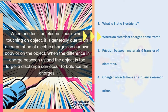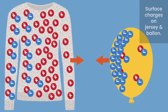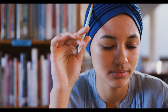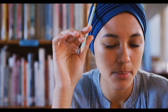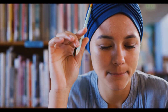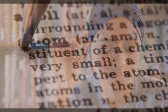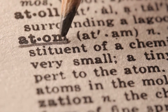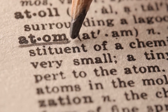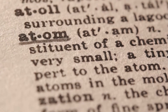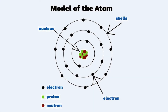We have seen that static electricity is the accumulation of electrical charges on the surface of an object. But where do electrical charges come from? To understand the origin of electrical charges, it is necessary to take another look at an atom model. All matter is made of atoms, which are made of even smaller particles known as subatomic particles.